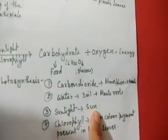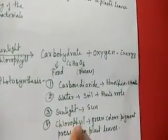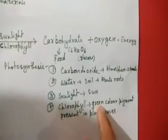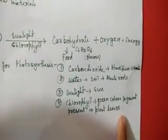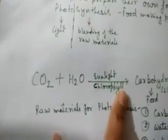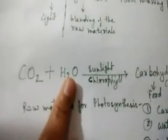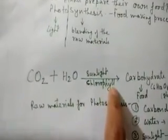The plants get sunlight from the sun. Chlorophyll is the green color pigment present in the plant leaves. During photosynthesis, carbon dioxide plus water, in the presence of sunlight and chlorophyll, produces carbohydrate, oxygen, and lots of energy.